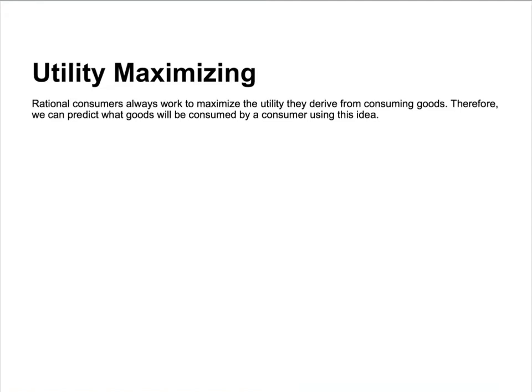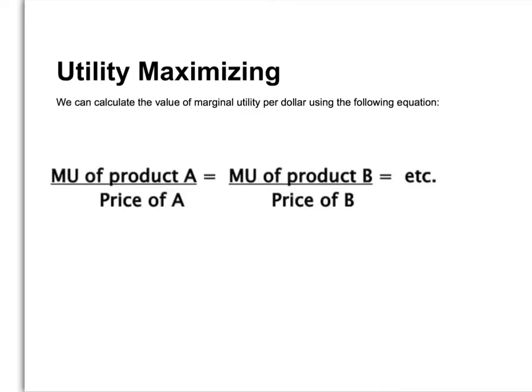The second advanced topic is called utility maximizing. Rational consumers always work to maximize the utility derived from consuming goods. Therefore, we can predict what goods will be consumed using this idea. We use the equation to calculate the value of marginal utility per dollar: MU of product A divided by the price of product A equals the marginal utility of product B divided by the price of B.